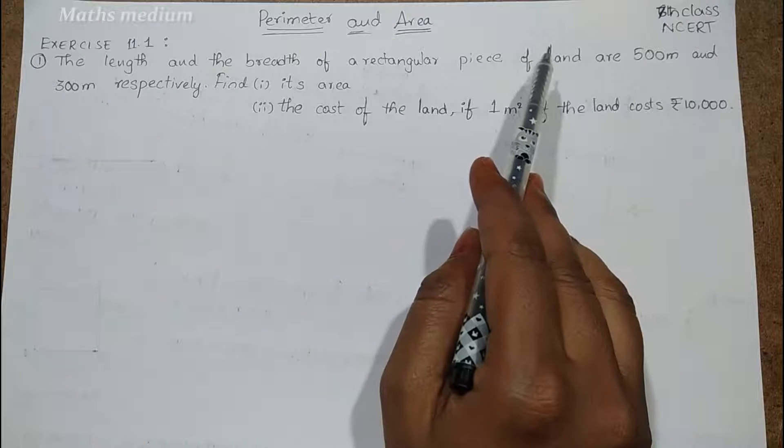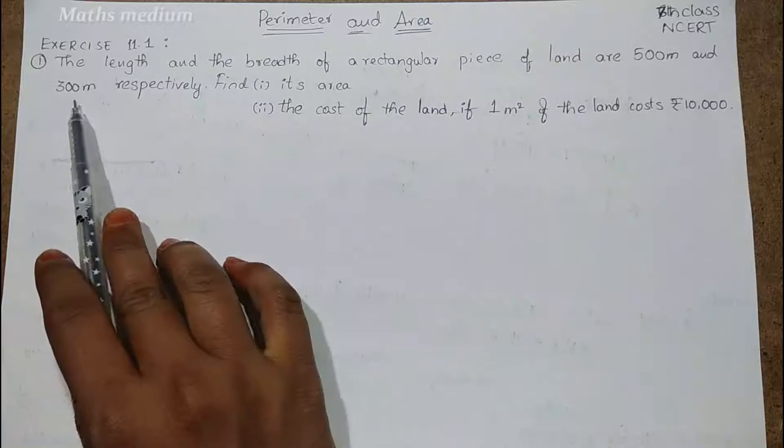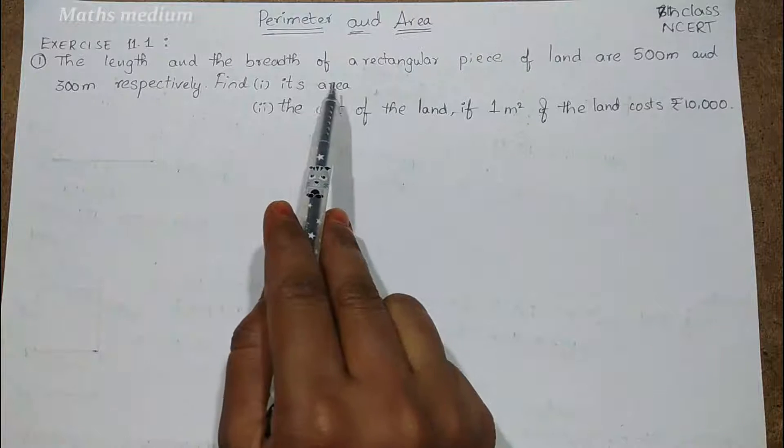Here we are having one rectangular piece of land, its length is 500 meters and breadth is 300 meters respectively. So we have to find its area.